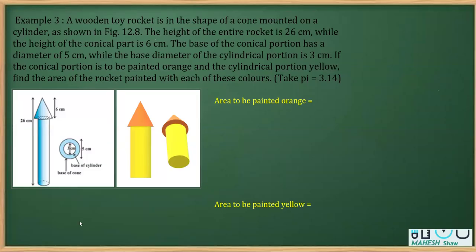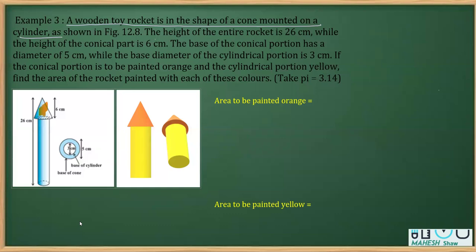In this video, I'll solve example three from the textbook based on the chapter surface area and volume, class 10. The question says that there is a wooden toy rocket in the shape of a cone mounted on a cylinder.